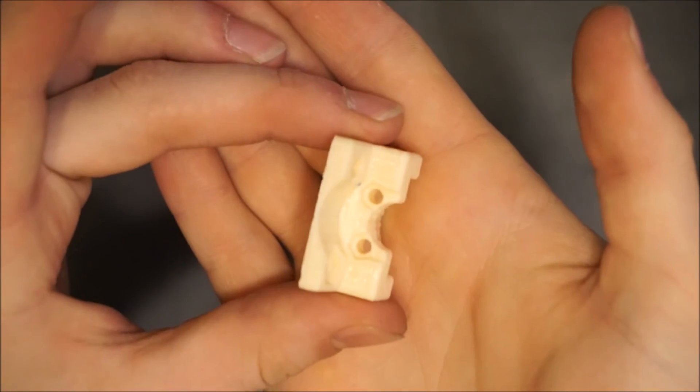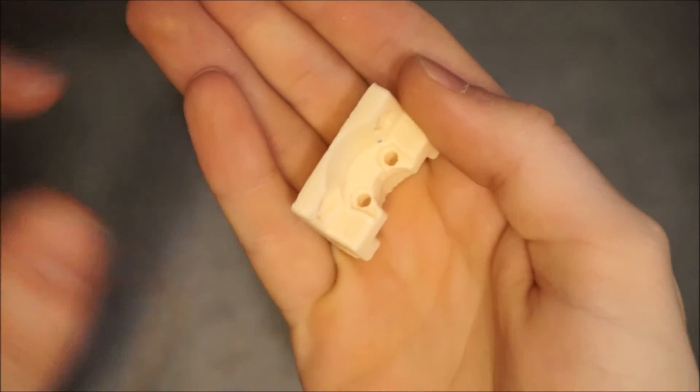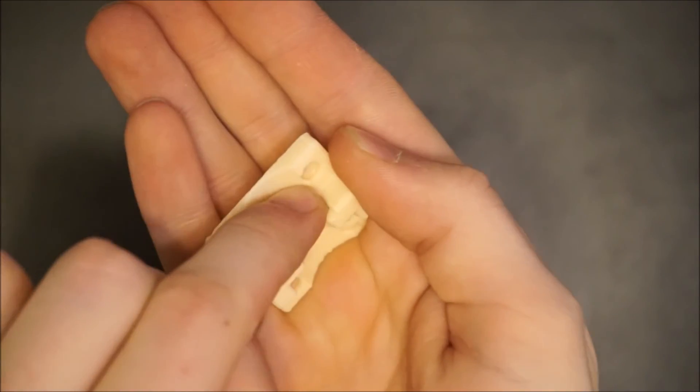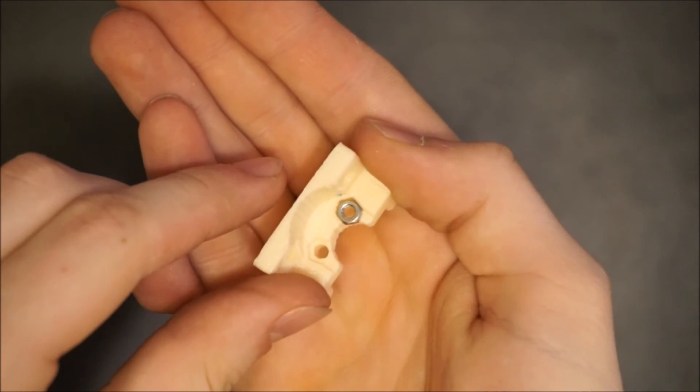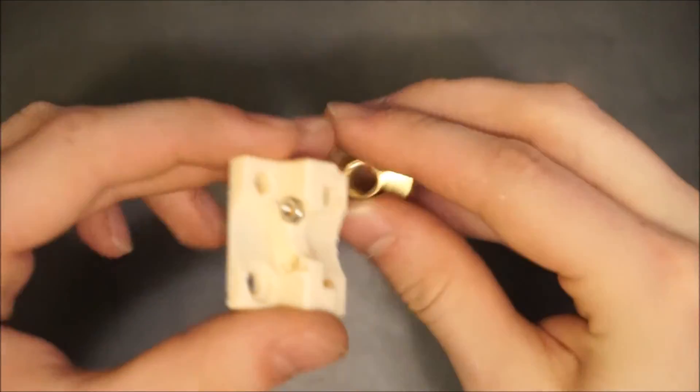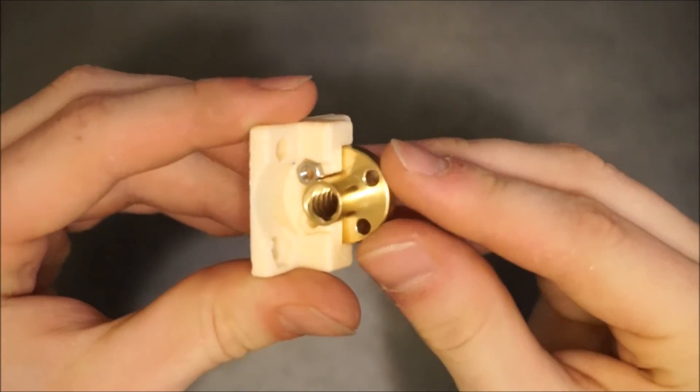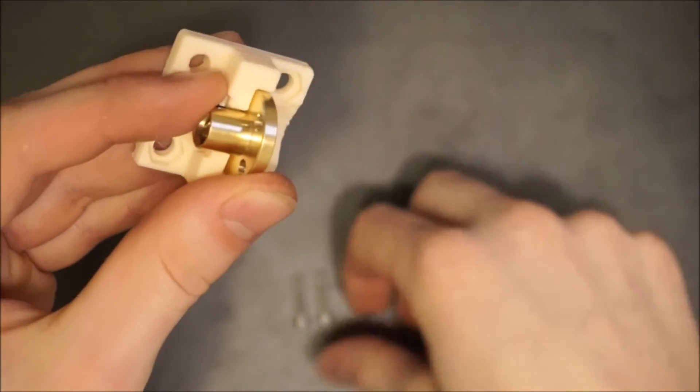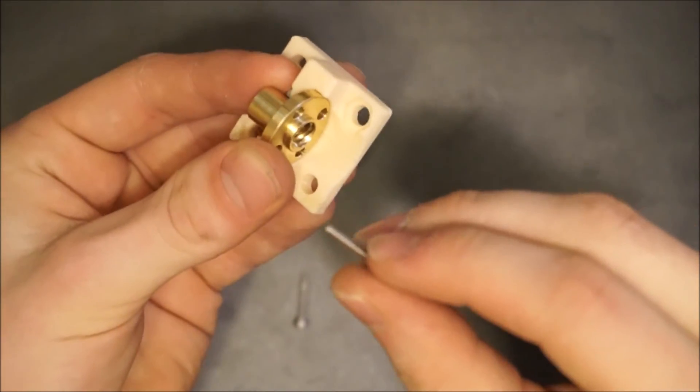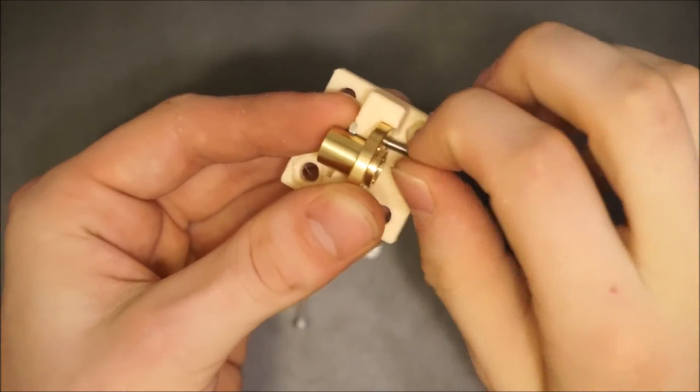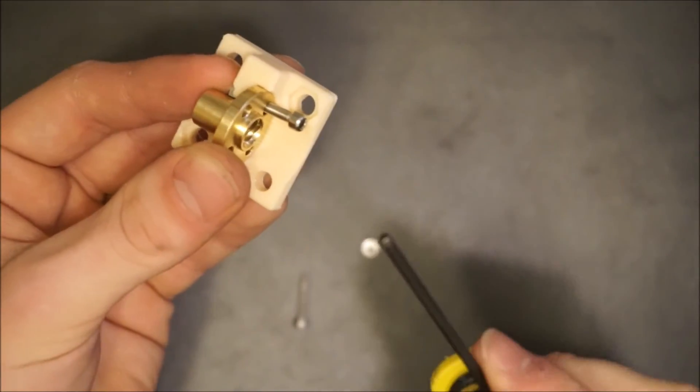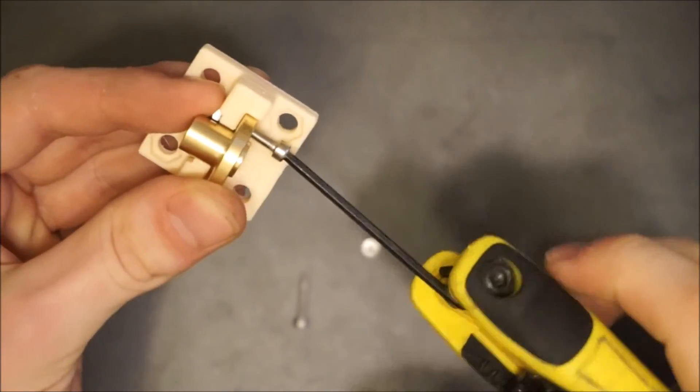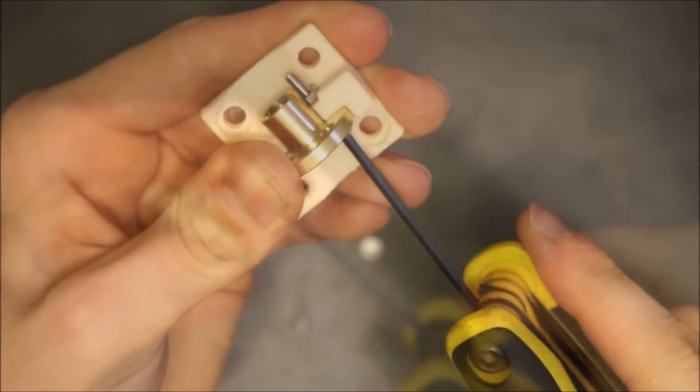Take your mount, lead screw nut, and two long M3 bolts with nuts and begin by placing the first nut into the trap. Then slide your lead screw nut into its groove and hold both nuts in place while you slide the M3 bolt in and tighten into place. Do this with the other nut and bolt.